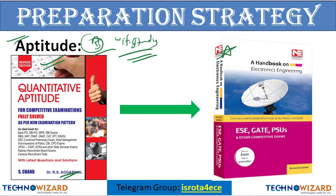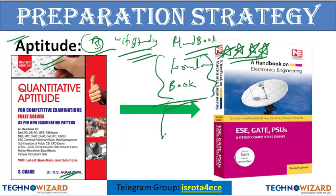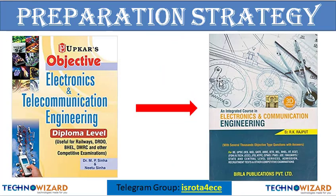Next, I would strongly recommend buying the Electronics Engineering Handbook — that is the formula book — provided by Made Easy Publications. Like, you may have studied everything, but at exam time you easily forget formulas. This book has each and every formula for every topic. PDFs may also be available online, so download it if you can't buy it.